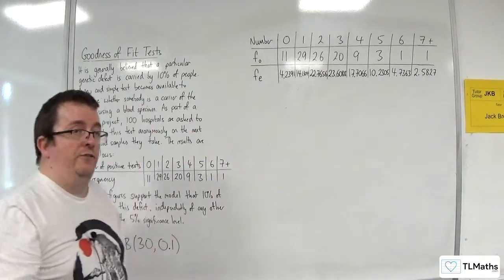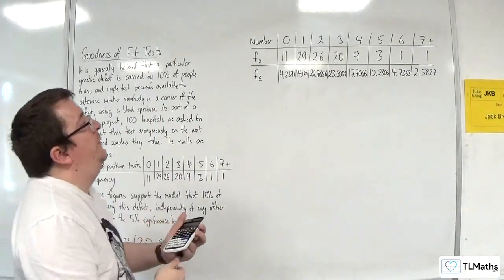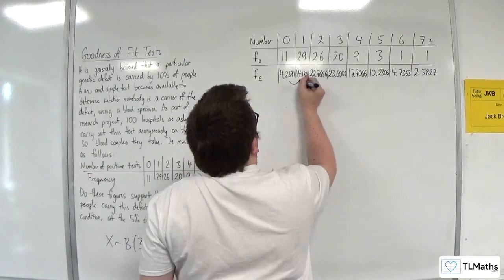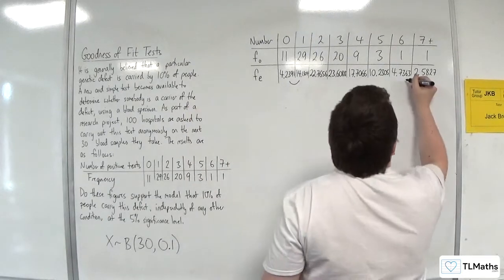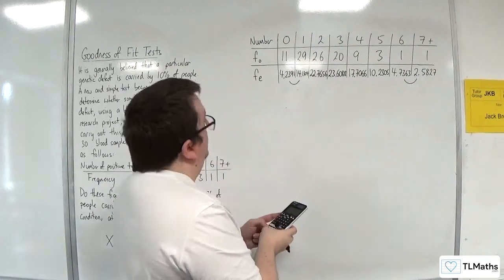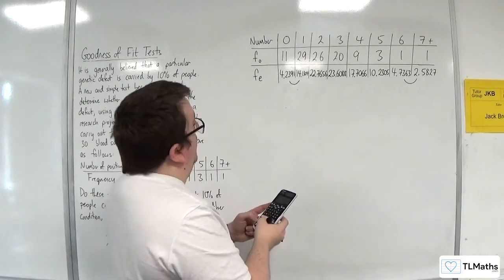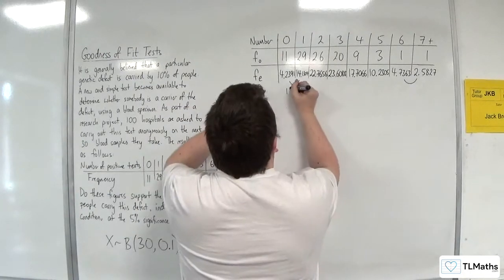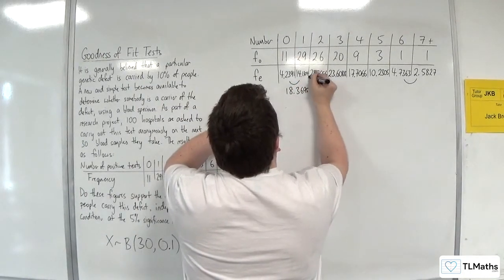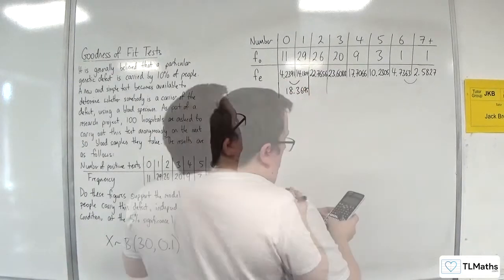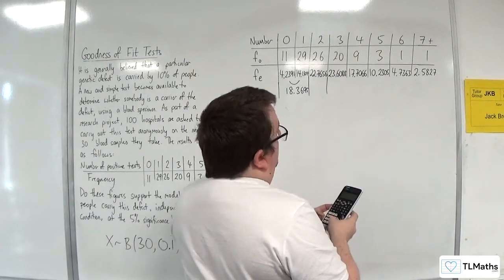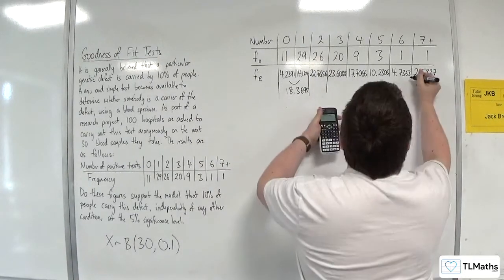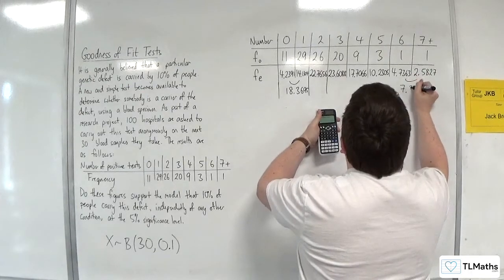Next thing to look out for small expected frequencies. So we've got three values here that are under 5. So I'm going to need to combine those two groups and those two. So 4.2391 plus 14.1304, that's 18.3695. So 4.7363 plus 2.5827, that's 7.319.